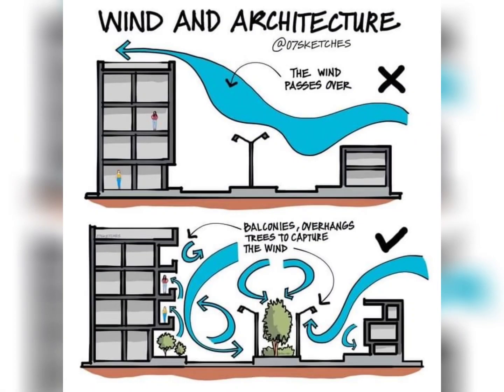This image showcases how architectural design harmonizes with wind to achieve natural ventilation. Wind flows over and around the building, guided by balconies, overhangs, and trees, creating a refreshing breeze within the structure. This passive cooling approach fosters energy efficiency and a comfortable living environment.